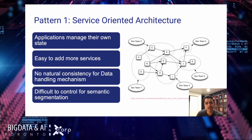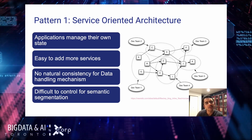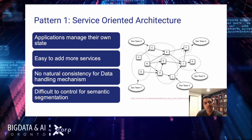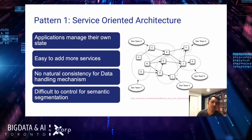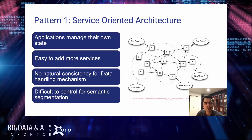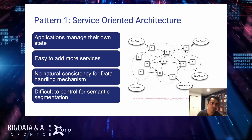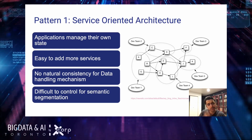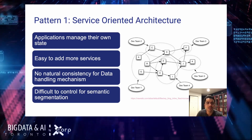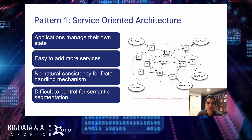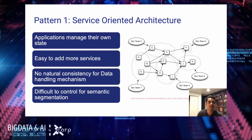The advantages of this architecture, and the reason why it's so prevalent in the industry, is that applications manage their own state, making it easy to add more services. If you want to add a new functionality — for example, having H call out to E — you don't need to work with a whole lot of different consumers. It's fairly easy to add additional services.